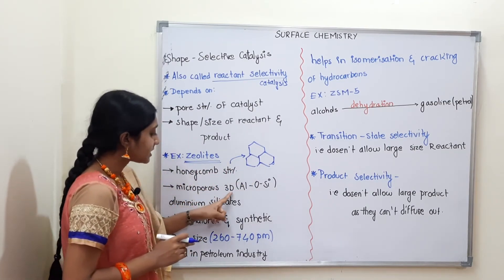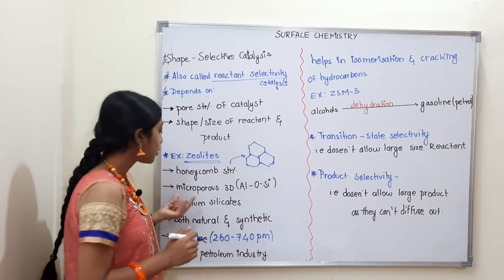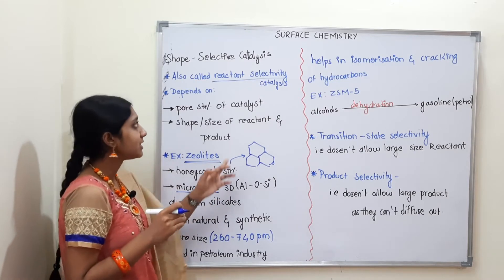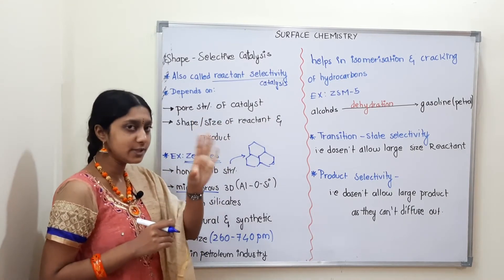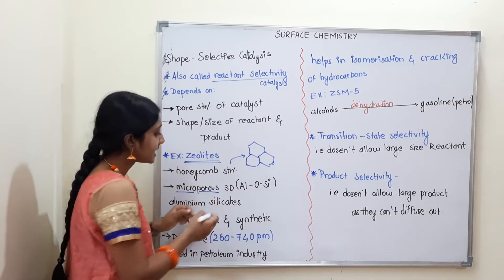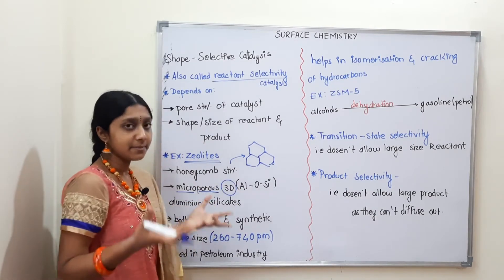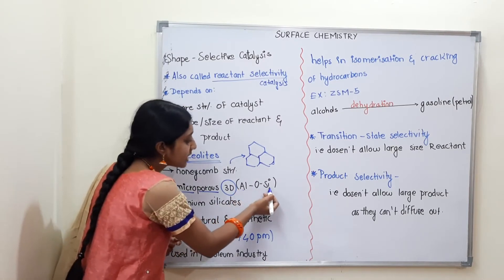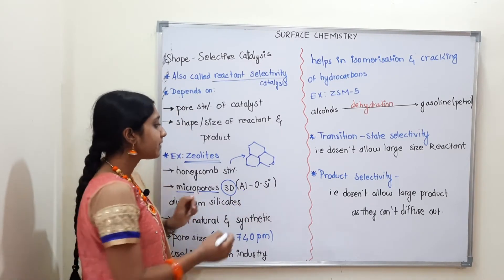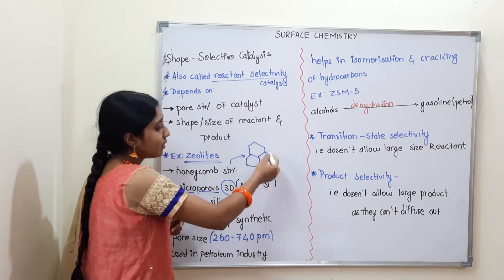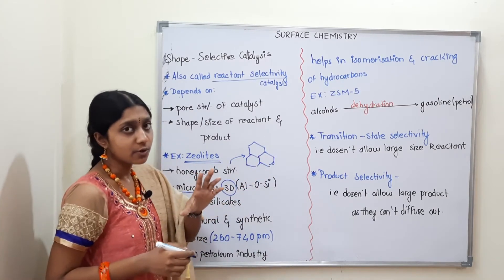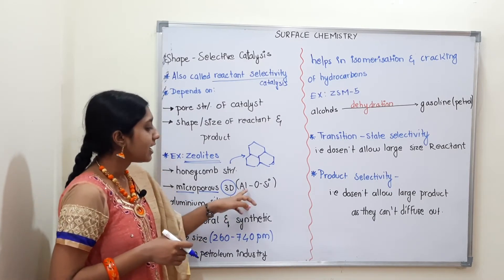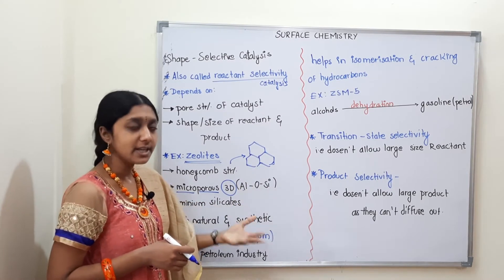Zeolites are microporous 3D aluminum silicates. Microporous means small pores — holes. The material is a 3D aluminum silicate framework, abbreviated as AlOSi.